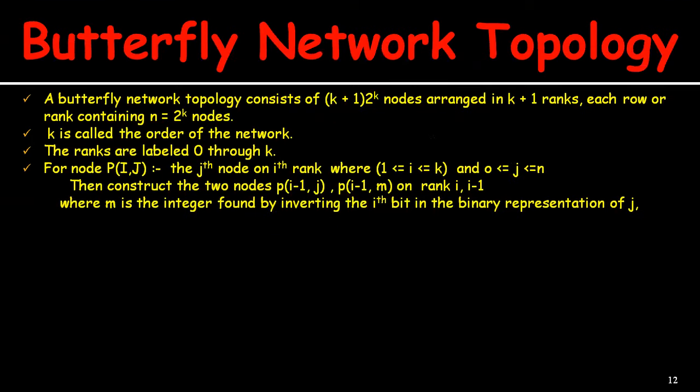A butterfly network topology consists of (k+1) × 2^k nodes arranged in k+1 ranks, with each row or rank containing n = 2^k nodes. Here we call k as the order of the network.